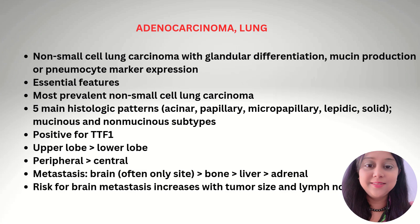Adenocarcinoma of the lung is a non-small cell lung carcinoma with glandular differentiation, mucin production, or pneumocyte marker expression. It is the most prevalent non-small cell lung carcinoma. The five main histological patterns are acinar, papillary, micropapillary, lepidic, and solid. It can be mucinous or non-mucinous, is positive for TTF1, and the upper lobe is involved more than the lower lobe. It is more commonly peripheral than central, and the brain is most often the primary site of metastasis, with other rare sites including bone and liver.